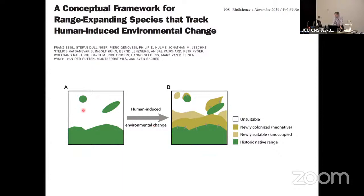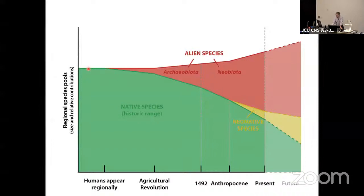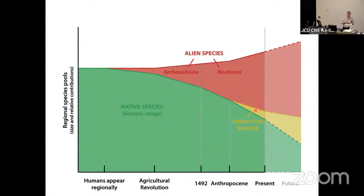The conceptual framework is simple: this is the native range of a species; environmental change makes some areas unsuitable, but suddenly there are newly suitable habitats. With time, we have native species, then alien species, and then we should expect neo-native species — native species shifting their ranges and perhaps displacing other native species that cannot migrate as quickly. In plants this can be dramatic — a native species migrating to mountain tops. It's not always invasive species displacing mountain plants; it's these neo-natives. The paper even distinguishes archaeobiota from neo-biota.